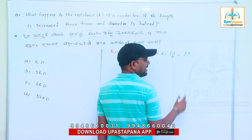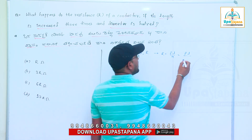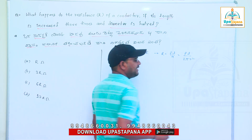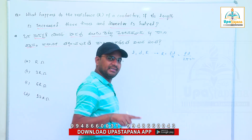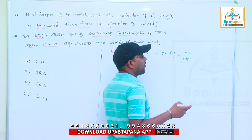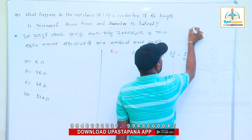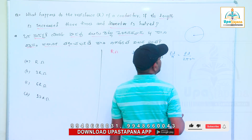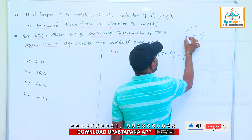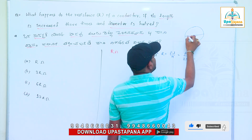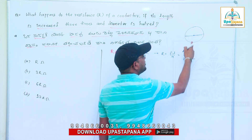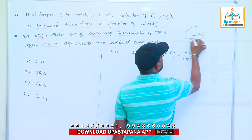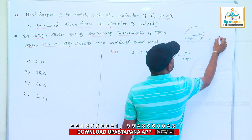We call it rho L by A. We don't have D directly. What is the area? Area is pi R squared, where R is the radius. But we need to find the diameter. Diameter equals 2R, so radius R equals D by 2.